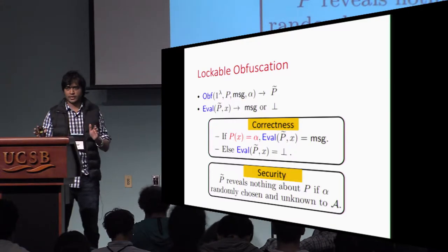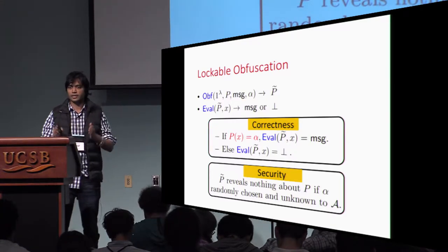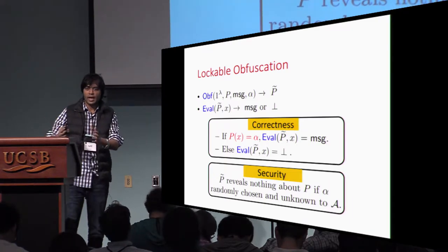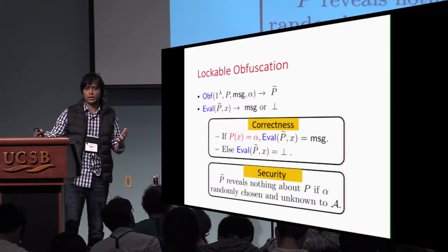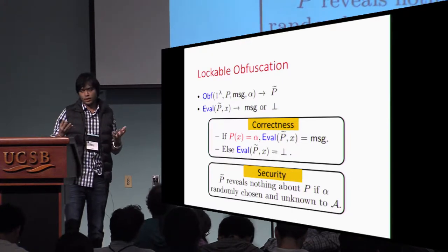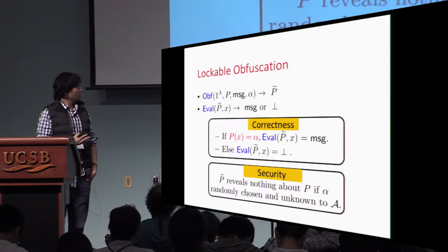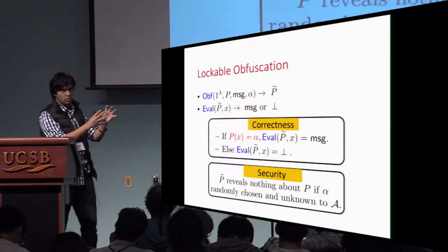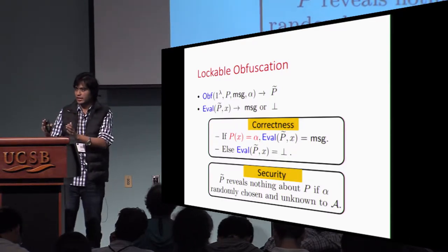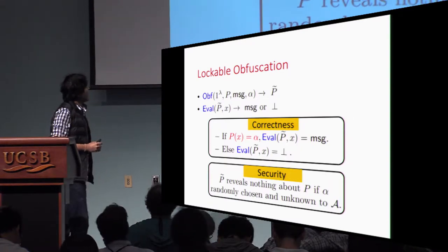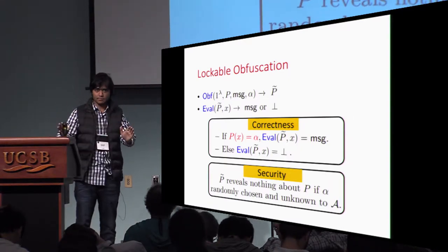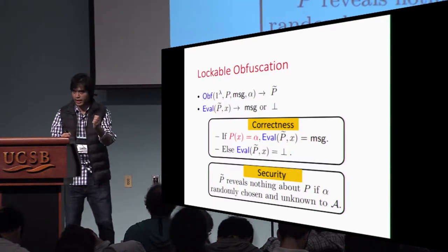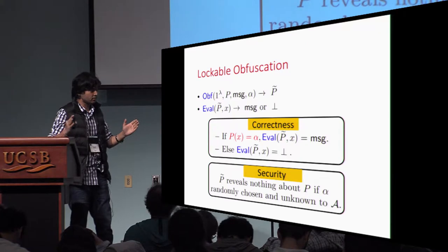In most obfuscation, we have two algorithms: obfuscate and eval. The obfuscate algorithm takes only a program as input and gives you an obfuscated program which you can evaluate and learn the output of the program on it. However, in lockable obfuscation, it takes as input a program, a message that we hide inside this obfuscated program, as well as a special string which we call the lock string alpha. And the evaluation algorithm takes as input the obfuscated program and input x, and it outputs either the message that was hidden inside the obfuscated program or a special reject symbol.